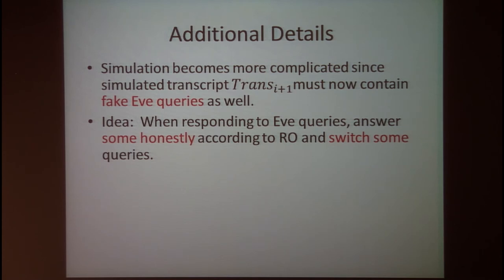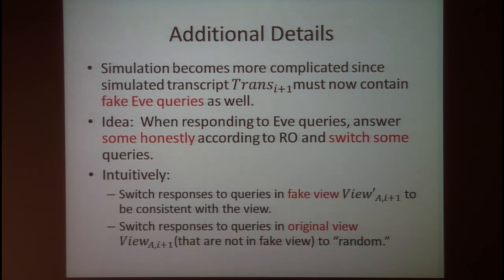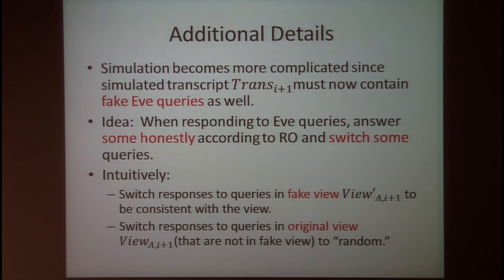Our simulation becomes more complex since the (i+1)-th message now also contains simulated EVE queries. We run the EVE algorithm honestly on the fake transcript and decide when to answer oracle queries honestly versus switching responses. We switch responses when a query made by EVE falls inside the fake view (responding consistently with the fake view) and also for queries inside the original view but not the fake view (switching those responses to random).